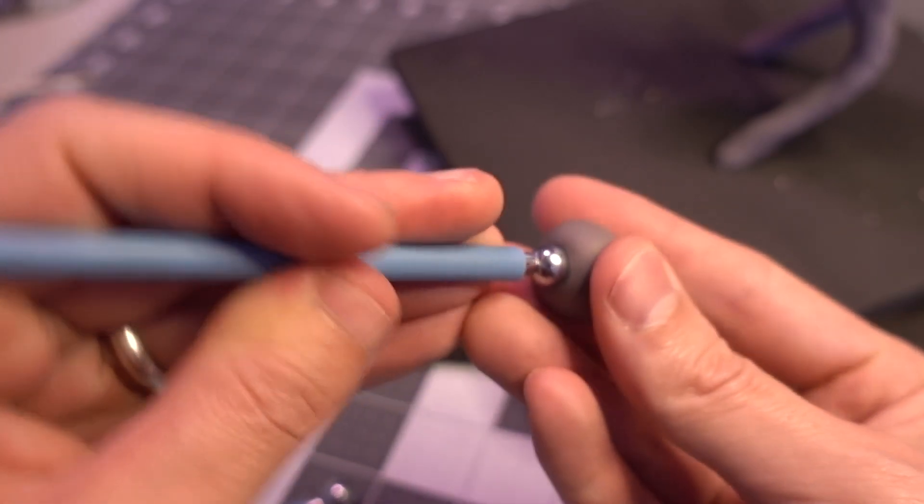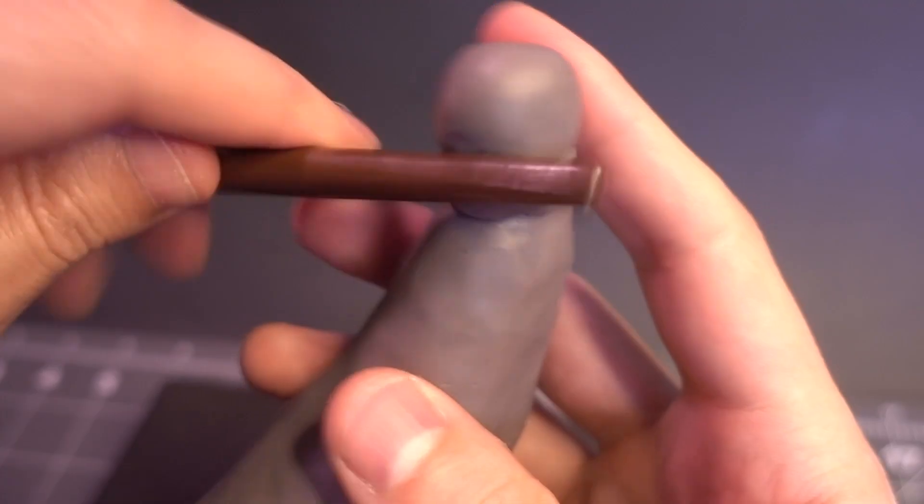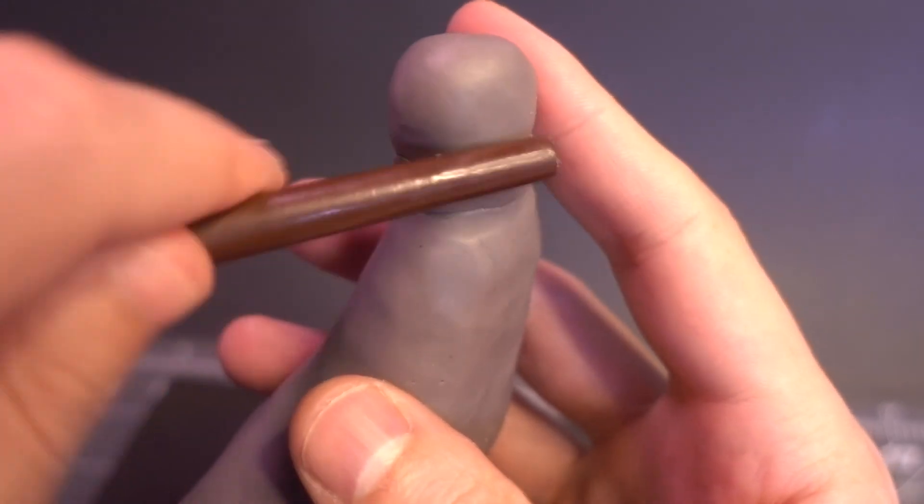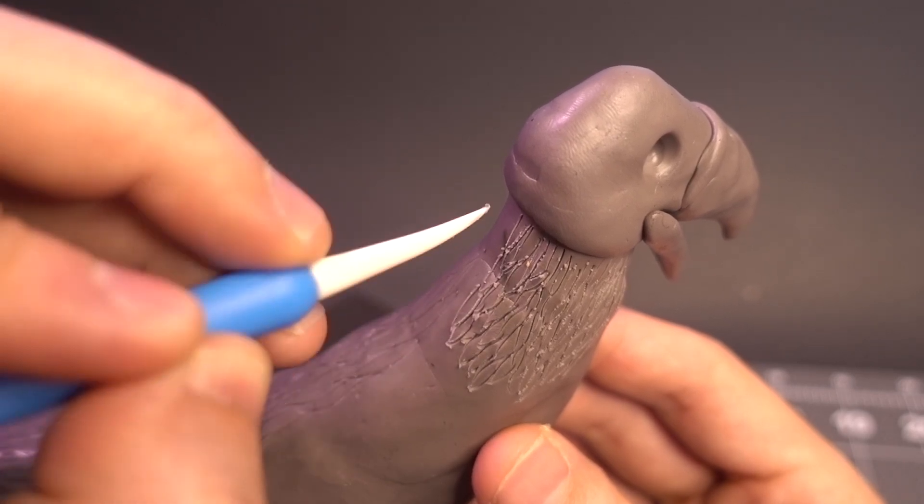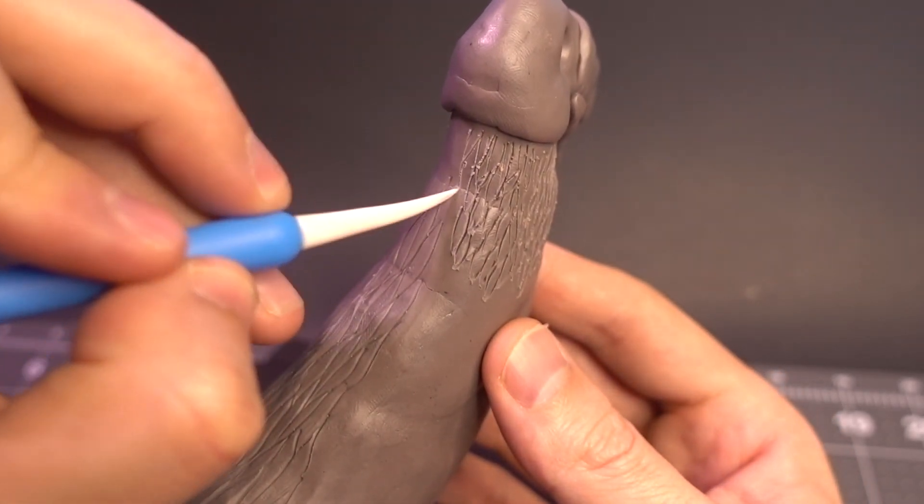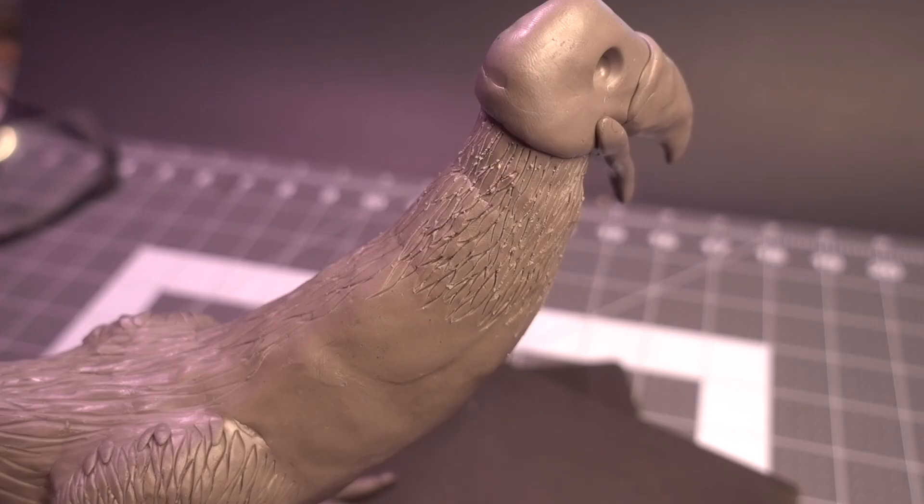For the head, I started off with a ball of clay, hollowed it out, then blended it into the neck. Off camera, I added a two-piece beak, then textured the neck using the same technique as before. To help smooth out the rougher edges produced by carving clay, I dabbed on some rubbing alcohol and brushed.